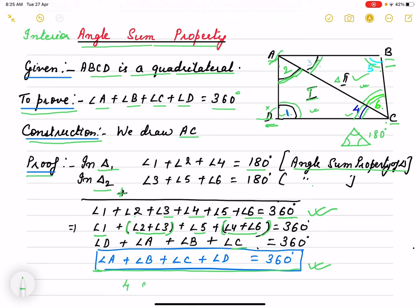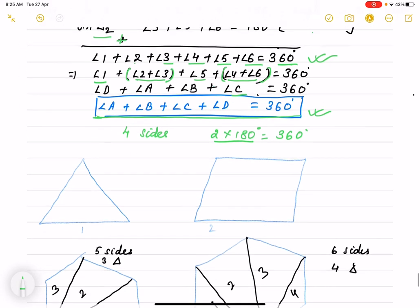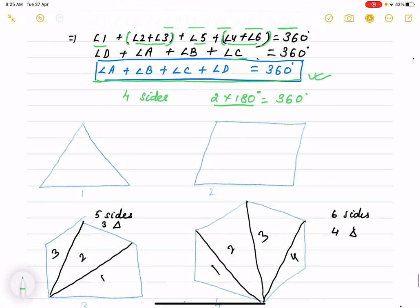That means if 4 sides, we are getting 2 times 180 degrees. Means we divide into 2 triangles. Just have a look that if a triangle is there, that means 3 sides and I am getting 1 times 180 degrees angle sum. 4 sides, that means 4 sides, that means 2 triangles and it is 2 times 180 degrees.